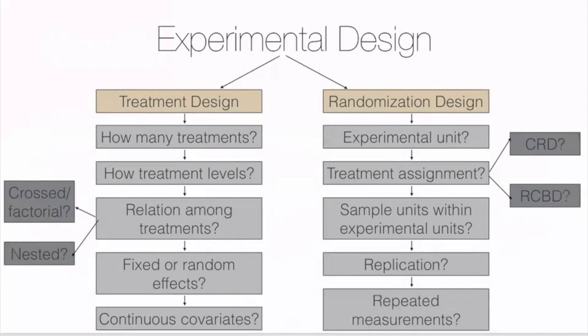In our study of ANOVA, we learned some technical details of treatment designs. For example, with two different experimental treatments such as fertilizer and pesticide, we decide the number of levels of each and use a two-way ANOVA model, first testing for a statistically significant interaction term. Later in this module, we'll discuss two different randomized designs: the completely randomized design (CRD) and the randomized complete block design (RCBD), and we'll talk about the details and virtues of blocking.